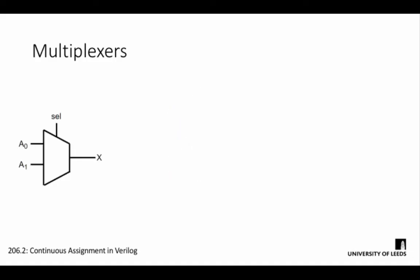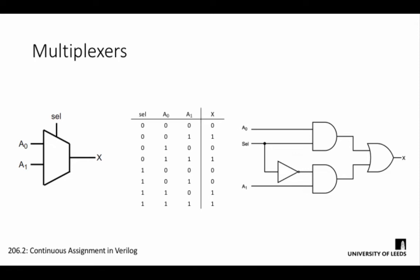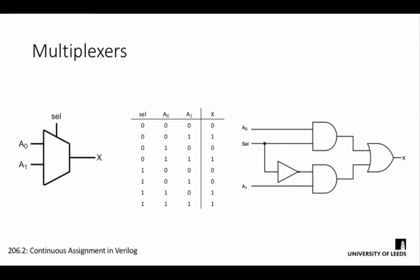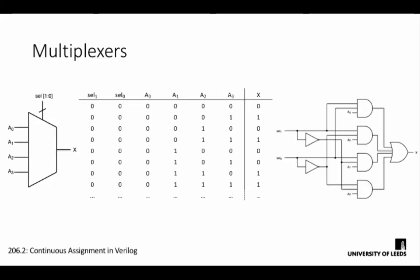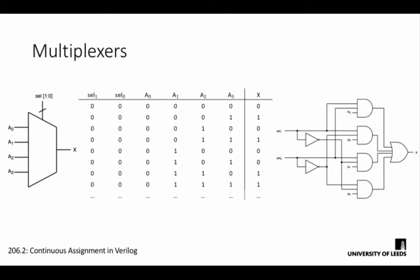We could easily build a simple two-input multiplexer from gate primitives by looking at the truth table. As you can see, it's just a couple of AND gates, an OR gate, and an inverter. However, once we start introducing more inputs, the circuit very quickly scales up in complexity. Whilst a four-input multiplexer is still a relatively simple circuit in terms of connections, it's going to be a long process to manually connect the gate primitives together.